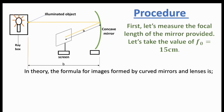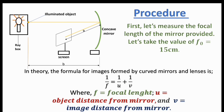In theory, the formula for images formed by curved mirrors and lenses is: one over f, our focal length, is equal to one over u plus one over v. This formula is very essential because everything we are going to do in this practical hinges on it. Here f is the focal length, u is the object distance from the mirror, v is the image distance from the mirror or screen. In this experiment, u is our b and v is our a.